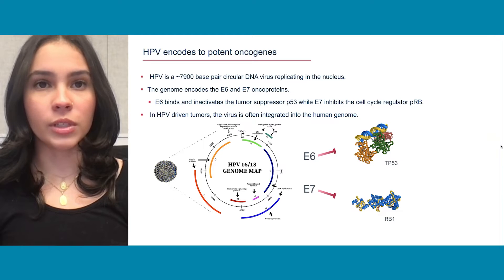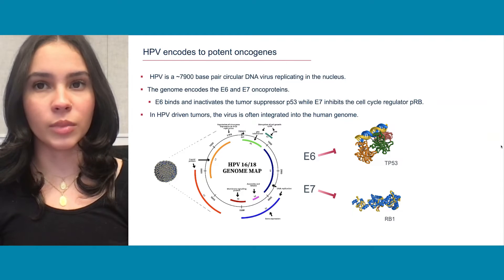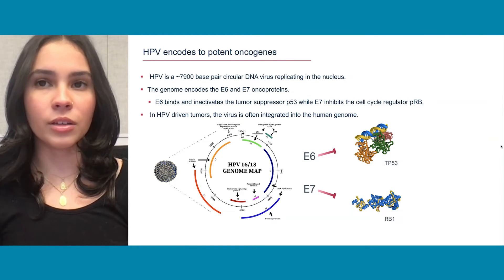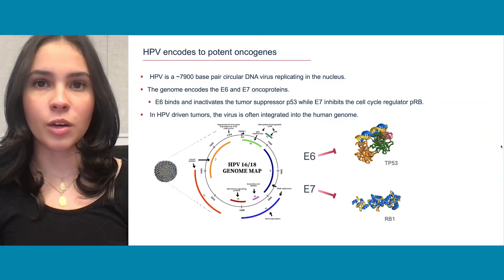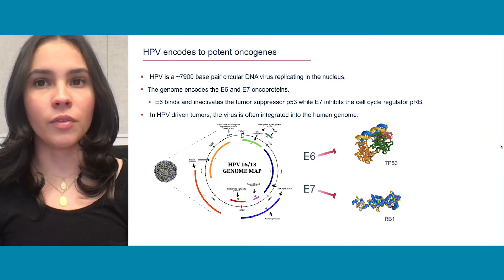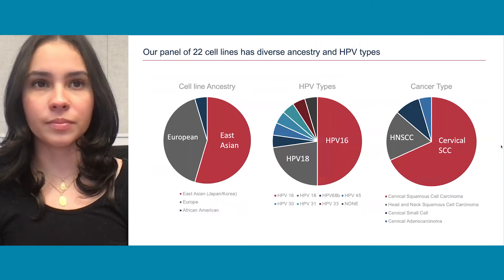With the use of nanopore sequencing, we have successfully mapped HPV reads in both cell lines and tumors, allowing us to learn more in-depth about the variation and integration by HPV type. In doing this, we can help further distinguish HPV types and improve the quality of care for individuals who are infected through specialized treatment by HPV type.